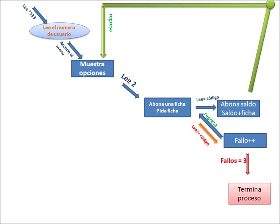Aquí aparece un ejemplo con la opción 2, abonar una ficha. Cuando lee el código y el código es correcto, abona la ficha y la suma al saldo actual, luego regresa al menú de opciones. Pero en caso de que coloques mal la ficha, te suma un fallo y te regresa a pedir el código nuevamente. Si fallas 3 veces, termina el proceso. También hay que recordar que si el programa dura 4 segundos sin hacer nada, automáticamente registra un fallo.